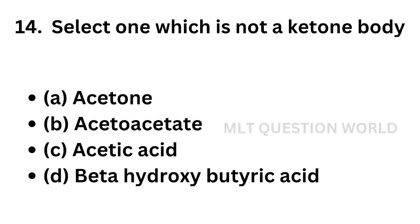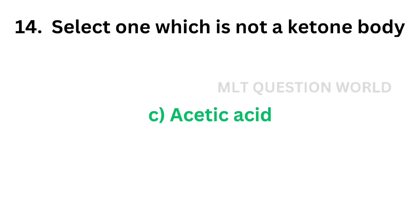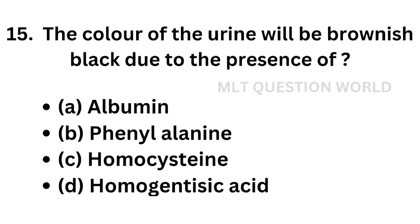Question number 14. Select one which is not a ketone body: option A, Acetone; option B, Acetoacetate; option C, Acetic acid; option D, Beta-hydroxybutyric acid. The correct answer is option C, Acetic acid. Acetic acid is not a ketone body. Acetone, acetoacetic acid, and beta-hydroxybutyric acid are ketone bodies.